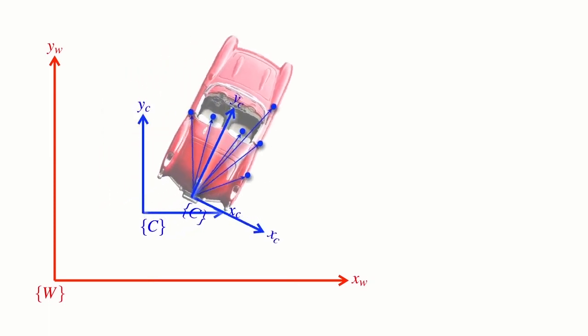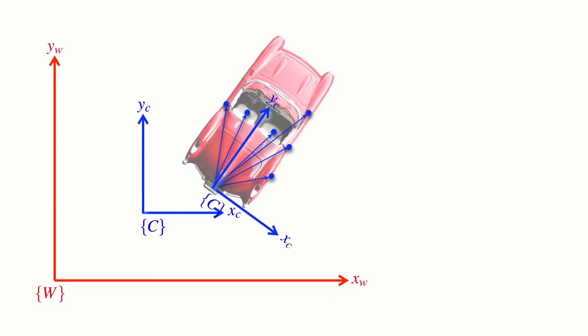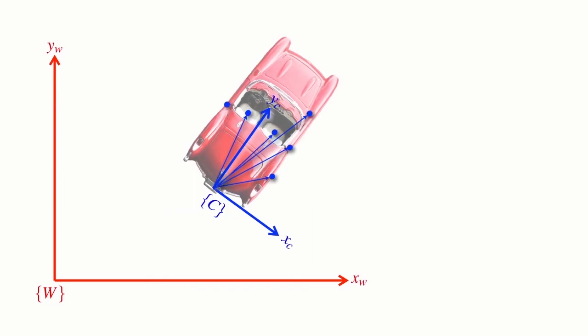Now if I move the car, these vectors have changed with respect to the world but they haven't changed with respect to the car's coordinate frame. Let's simplify things a bit and introduce a pose here. We've introduced another one of these fat arrows, which represents a pose, and this is the pose from the world coordinate frame to the car's coordinate frame. So it's W psi C.